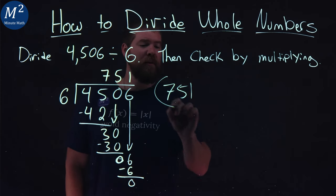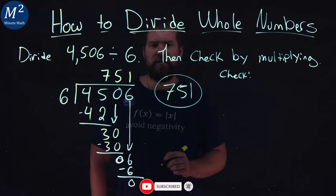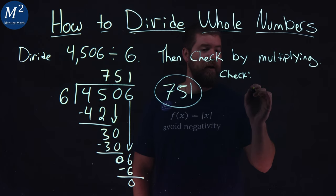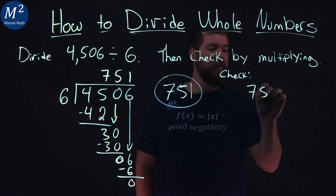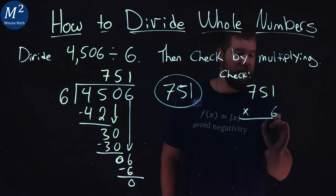751 is my answer here, but we've got to check it. Let's check quickly with multiplication. Not too hard to do. I'm going to take 6 and multiply 751 by it. So 751 times 6 here, and we should get 4,506 if we did it right.